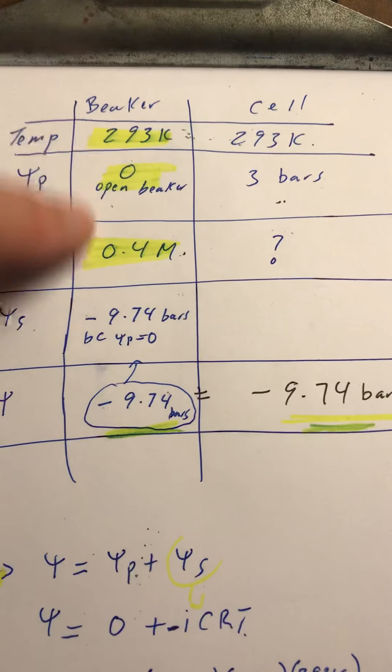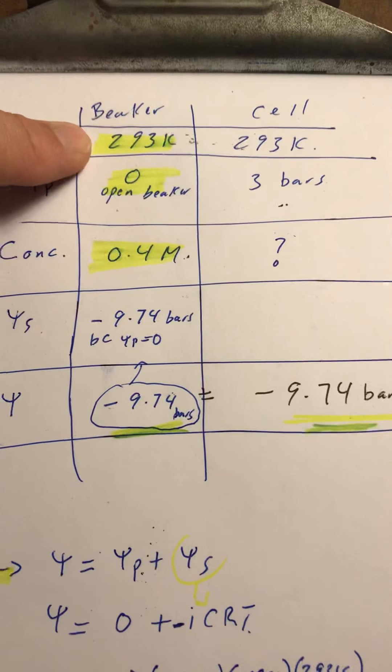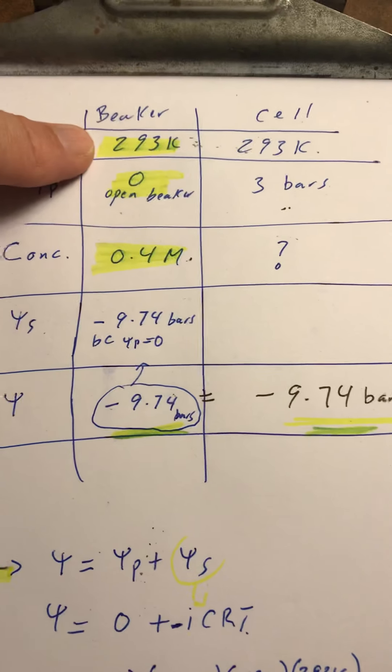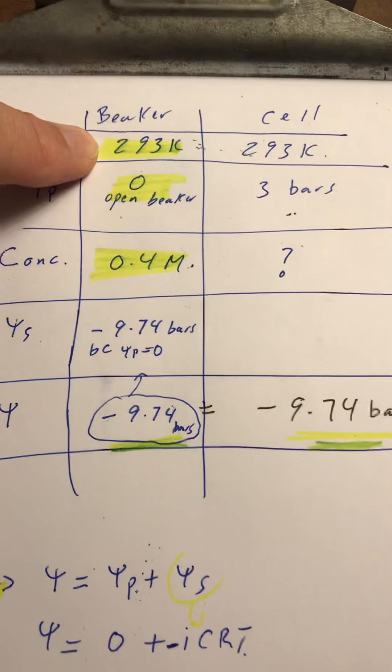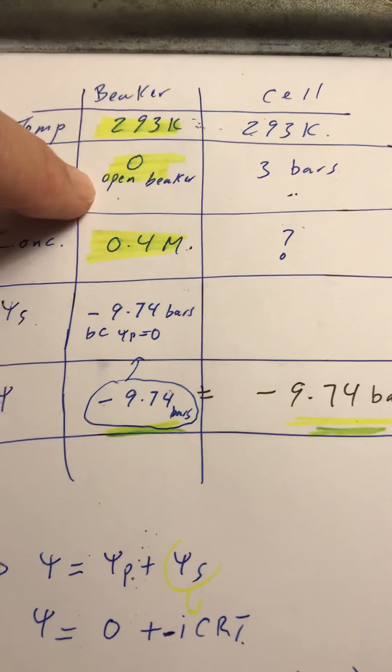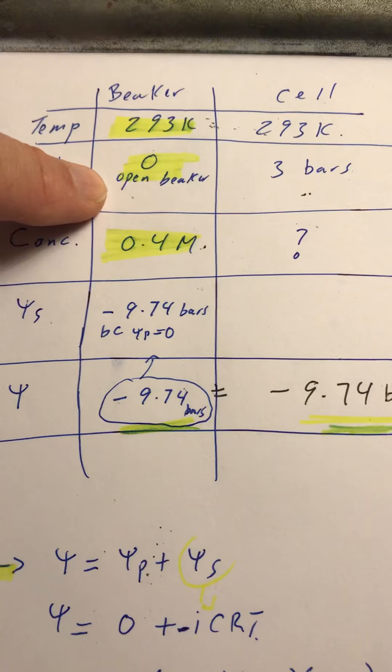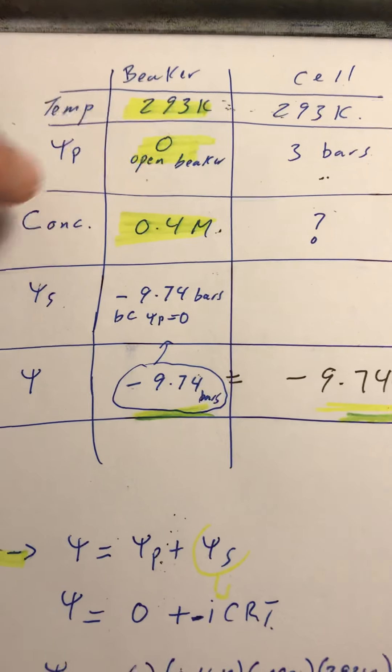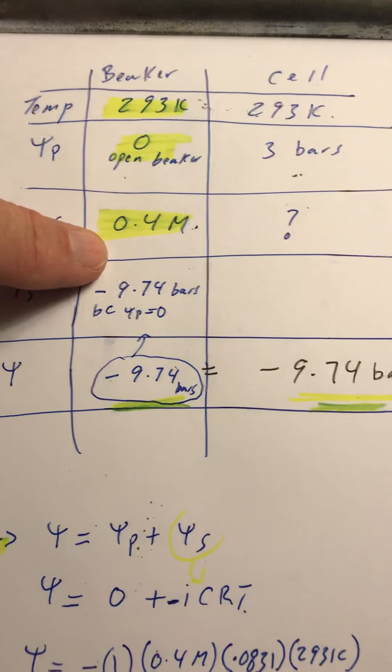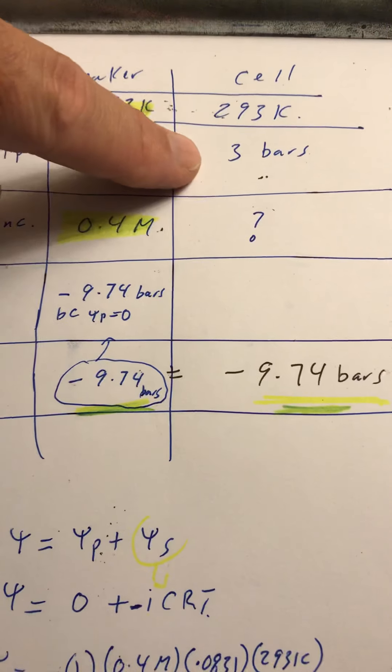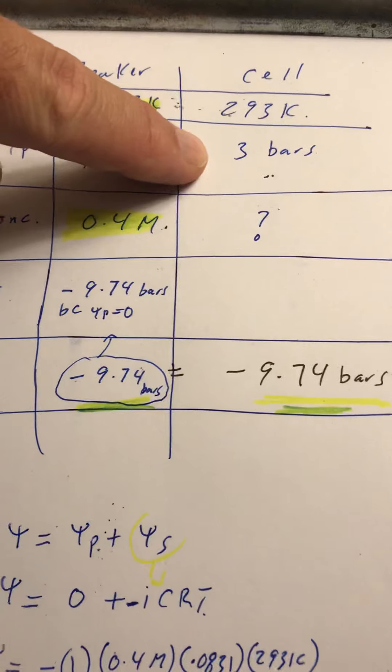I put down the information that I'm given. I highlighted in yellow what I'm given. I'm given the temperature, which is degrees Celsius plus 273 to make it into Kelvin temperature. I'm given that psi P is an open beaker, so psi P is zero, and I'm given the concentration is 0.4 molar concentration of sucrose. I'm also given the psi P for the cell is three bars.